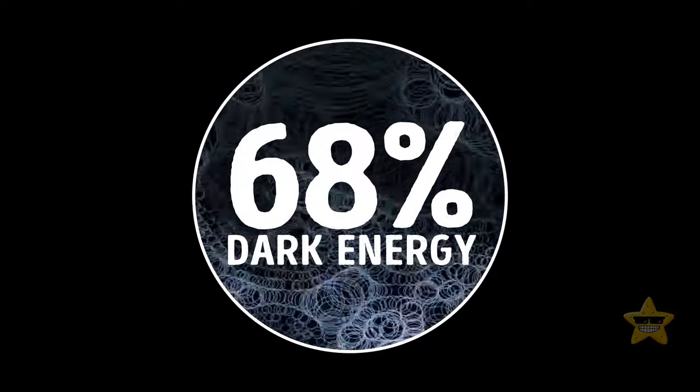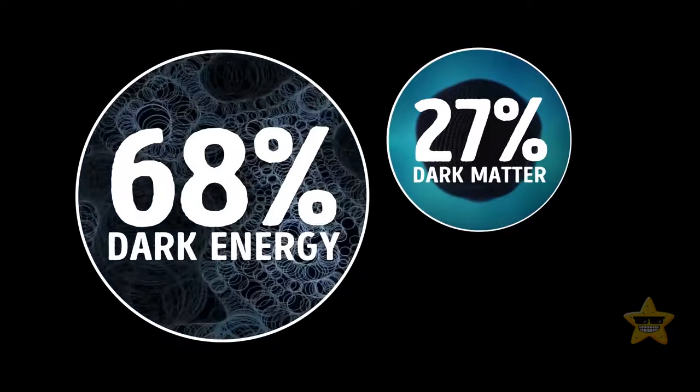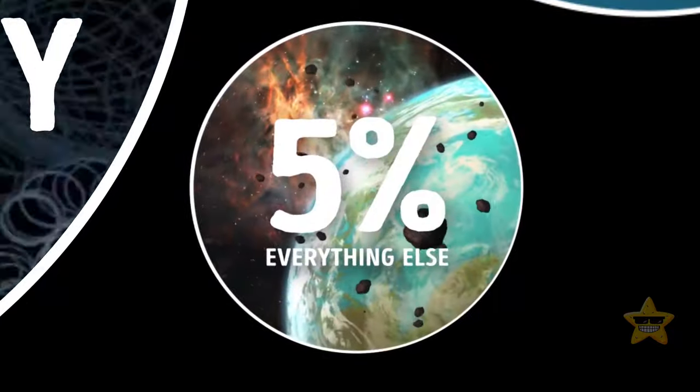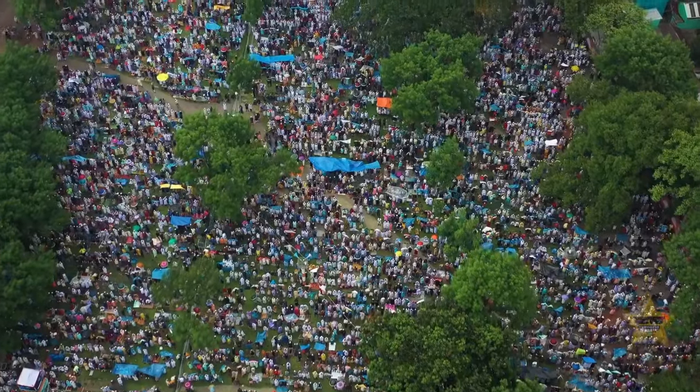Around 68% of the universe is made up of dark energy, while 27% is dark matter. The rest, which is normal matter, if you'd like, makes up the stars, planets, and other cosmic bodies we're familiar with.